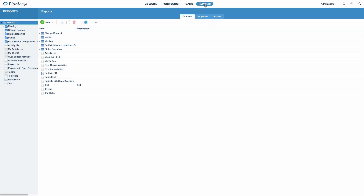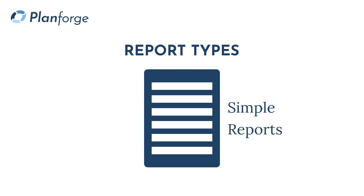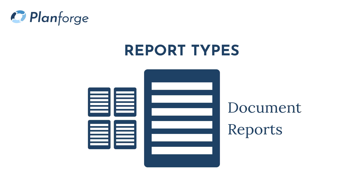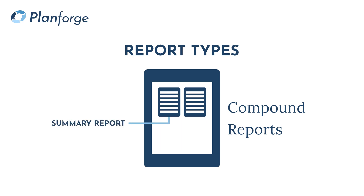Click Reports to access the Report Wizard. You can choose between three report types: Document Reports, Compound Reports and Simple Reports. Simple Reports are the basic reports that all others are based on. In PlanForge, Simple Reports are created using a wizard that guides you through each step. Document Reports collect several Simple Reports into one continuous report based on a common business object. Compound Reports optionally combine a summary report with a mandatory detailed report.